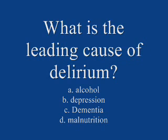B, depression; C, dementia; D, malnutrition; E, stroke. What is your answer? Think about it and give an answer. The answer is C, dementia. Dementia is the leading risk factor for delirium. Delirium is the acute confusional state — it is typically multifactorial.